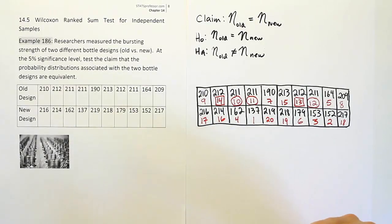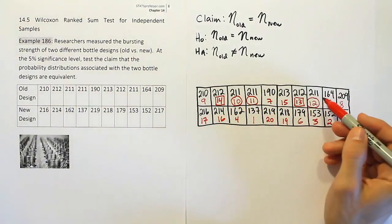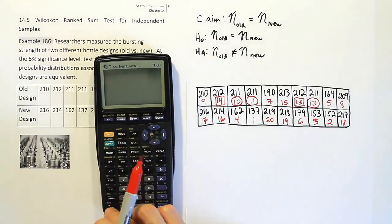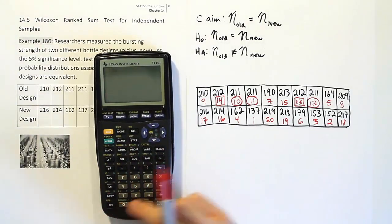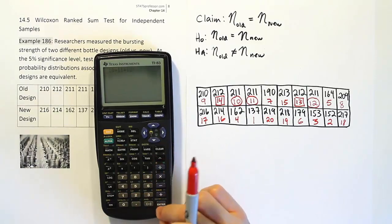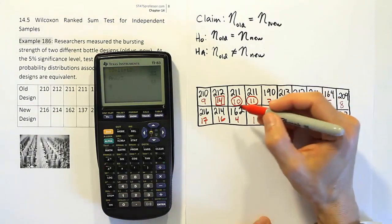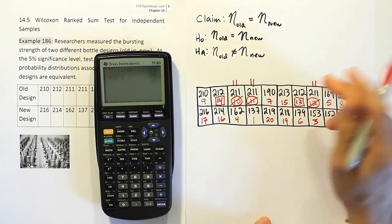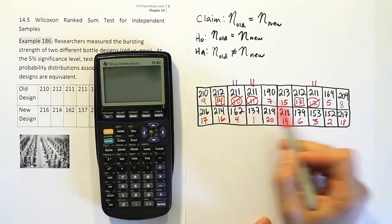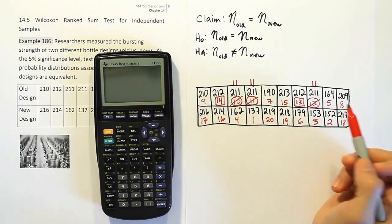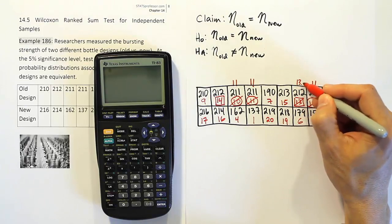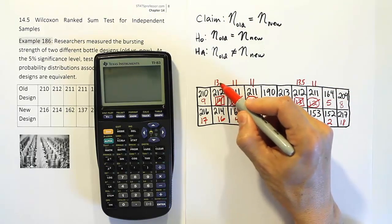Now let's fix the ties. For the circled group (three 211s assigned ranks 10, 11, 12), we average them: (10 + 11 + 12) / 3 = 11. So each of those three values gets rank 11. For the rectangle group (two 212s assigned ranks 13 and 14), we average: (13 + 14) / 2 = 13.5. So each of those two values gets rank 13.5. The ranking is now fully complete.